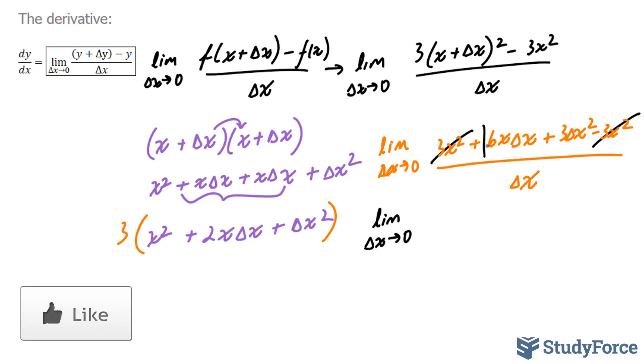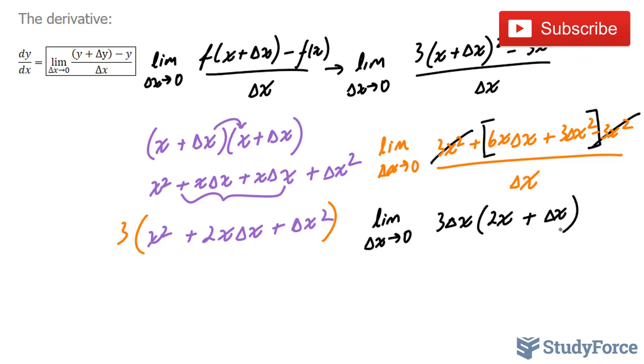This part can be factored. In fact, it can be common factored. There is a delta x in common in both of these terms and a 3. So I'll factor that out. 3 delta x, leaving me with 2x plus delta x. You can check if you did this correctly by multiplying this term into these two, and if you do that, you should end up with the same. Over delta x.